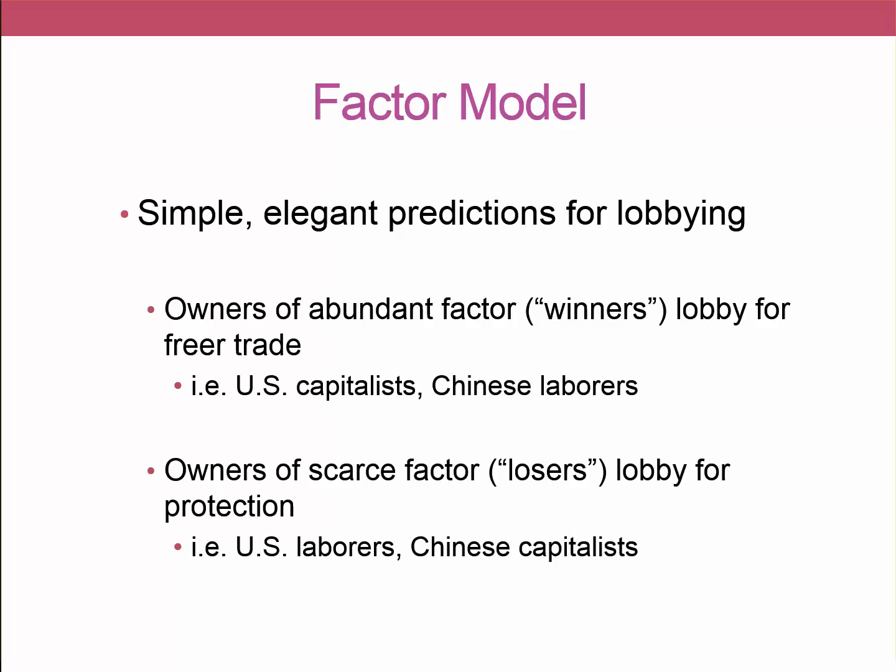Coming full circle to our central question — what explains government policy choices — the factor model says it comes down to the relative balance of power between the winners and losers of free trade. If the losers of free trade are more powerful, you're likely to see protectionist policies. If the winners are more powerful and able to voice their wishes to representatives, we're more likely to see free trade in those sectors and countries.